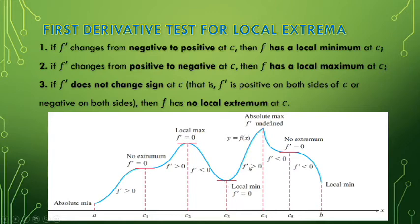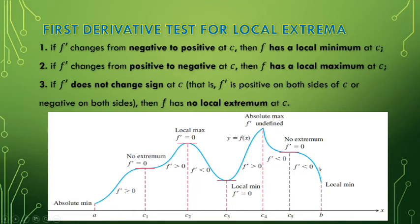Then at the next interval, f' > 0 — so from negative becoming positive, you have a local minimum where f' = 0. Then from positive becoming negative again, you have a maximum — but this time it is the absolute maximum, where f' is undefined because of the rapid change in slope. This is a piecewise defined function where those pieces connect. At another point there is no extremum because f' goes from negative to negative — still decreasing. And at the endpoint, you have a local minimum — only local, because the absolute minimum is at the other end.